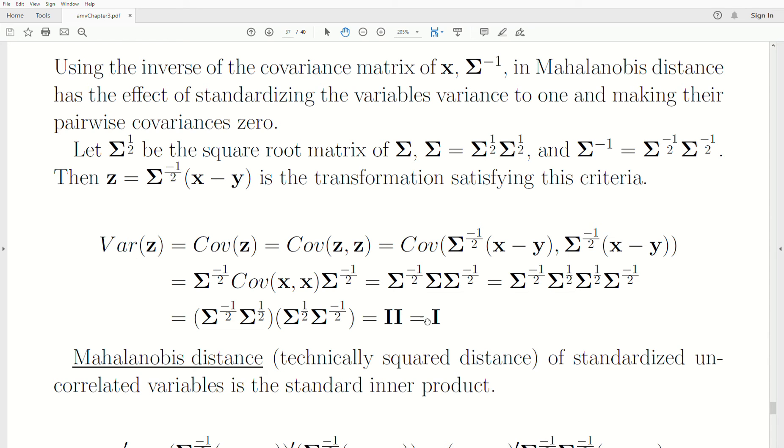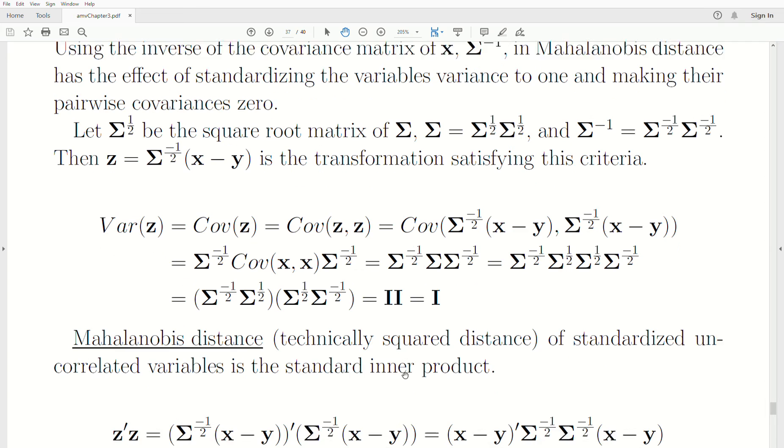So the variances are one. One's down the diagonal. All the off diagonals are zero, which means the covariances are zero. So all the variables have zero covariance.